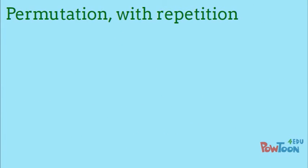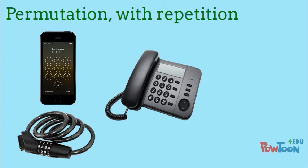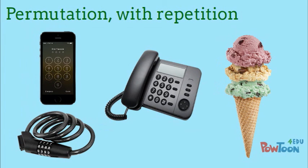We'll start with permutations with repetition. Examples of permutations with repetition include passcodes, phone numbers, and even three scoop ice cream cones if you care about the scoop order and can get multiple scoops of the same flavor.